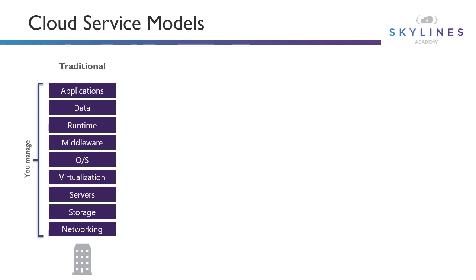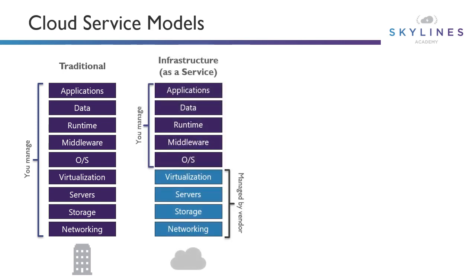Cloud came along after virtualization, built upon that idea, and gave us additional models. The first being Infrastructure as a Service, also known as IaaS. The big difference is that we no longer manage the bottom four pieces of the stack — networking, storage, servers, and virtualization. In the Azure world, Azure manages all of those for us. We don't have to physically plug cables in, rack storage arrays and servers, or maintain our own virtualization layer like VMware or Hyper-V.